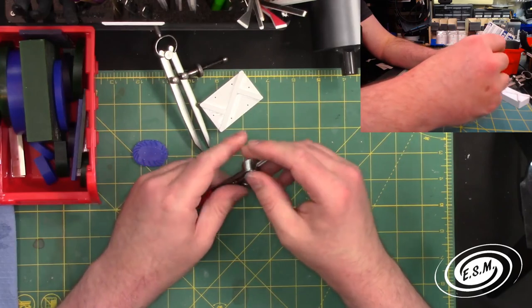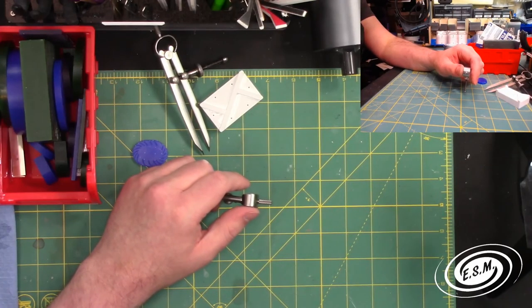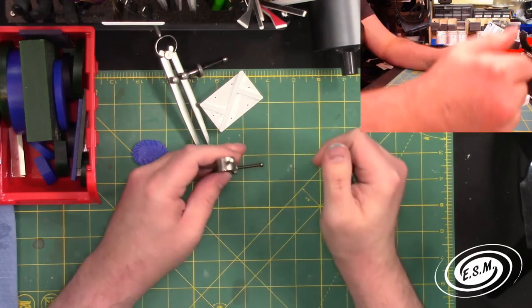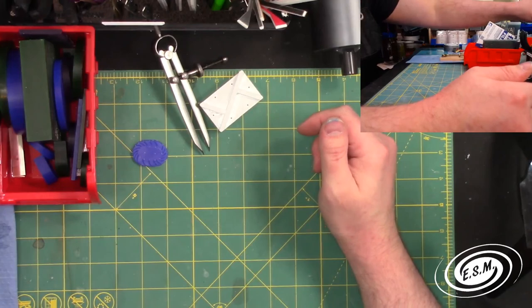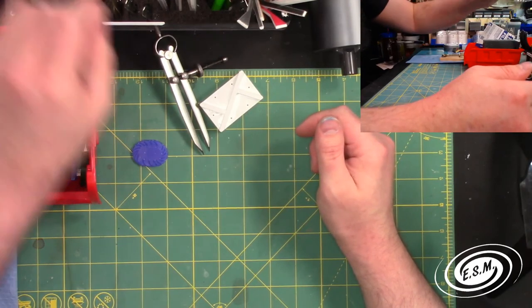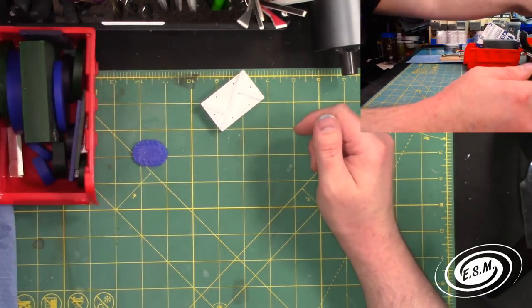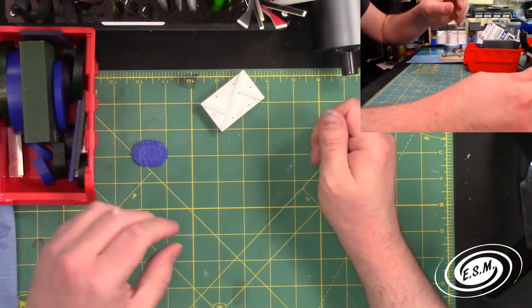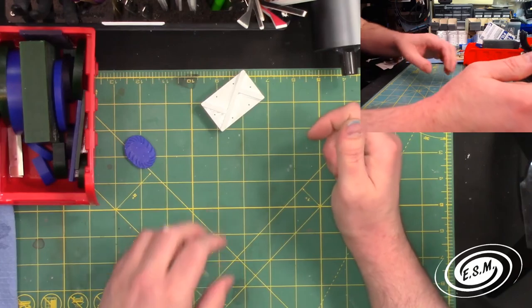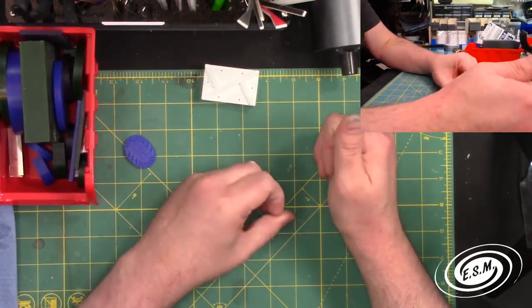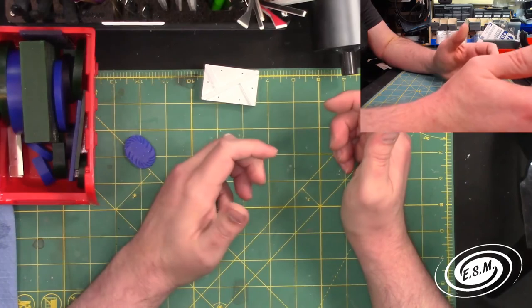When I was doing engineering, I used Starrett and Brown and Sharpe was for measuring equipment is what I used. I prefer Brown and Sharpe over Starrett. Some people prefer Mitutoyo, but I was never a fan of Mitutoyo. I preferred Starrett and Brown and Sharpe. Brown and Sharpe was my go-to for calipers or vernier, however you want to call it. They were my go-to. I loved them.